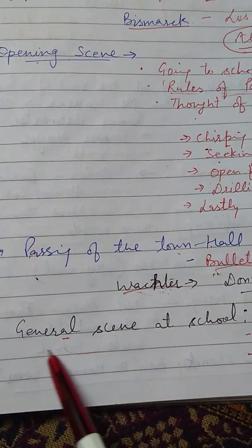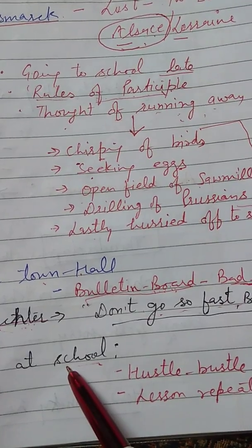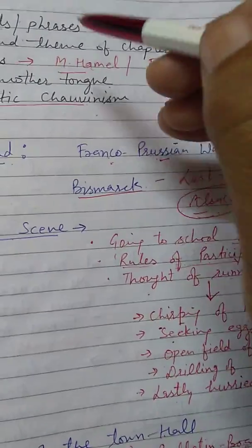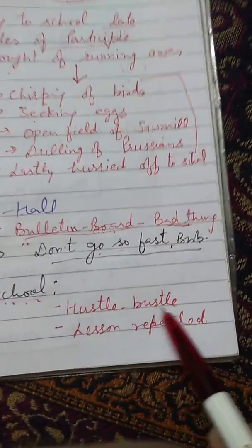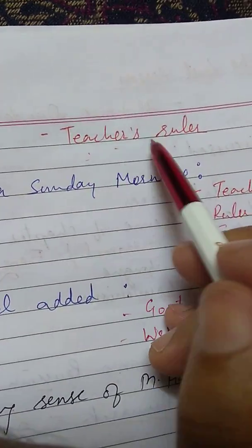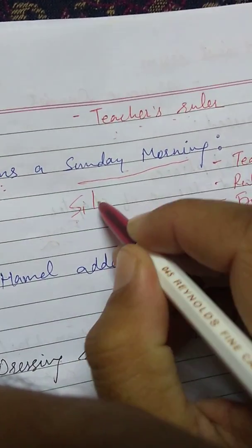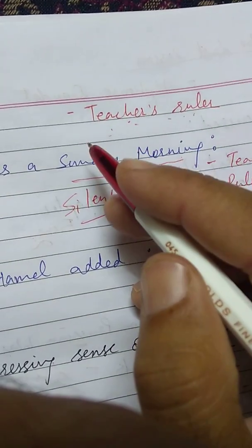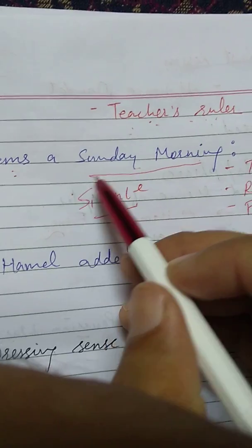As he moved into the school, before entering the class, the writer Alphonse Daudet describes through the narrator — the boy Franz — the general scene of the school. Generally in school there is hustle and bustle, lessons being repeated in classes, scratching of benches, and the teacher's ruler. But today, as Franz moved in, it seemed like a Sunday morning. He observed a great silence — no noise at all, unlike the usual ringing-bell sound of the school.